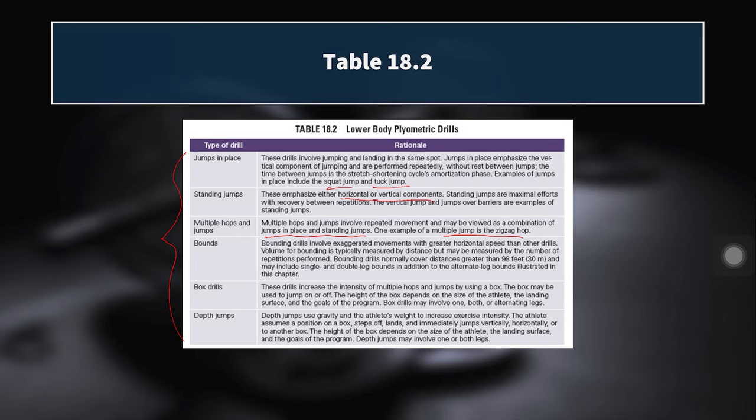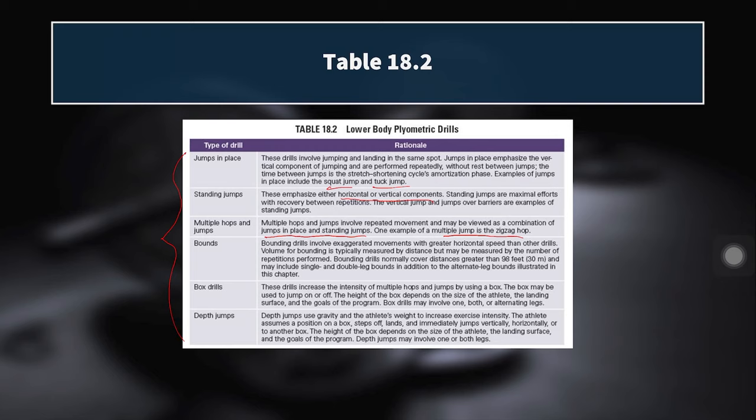Bounding drills can be either single leg or double leg — unilateral or bilateral — but instead of emphasizing the vertical component like jumps, bounds emphasize the horizontal component. Sometimes you can use distance rather than number of contacts to quantify bounding volume, so you might prescribe 20 or 50 meters of bounding instead of sets and reps. Next are box drills, which increase the intensity of multiple hops and jumps by using a box. The box can be used to jump on or off, and the height depends on athlete size, landing surface, goals, and ability.